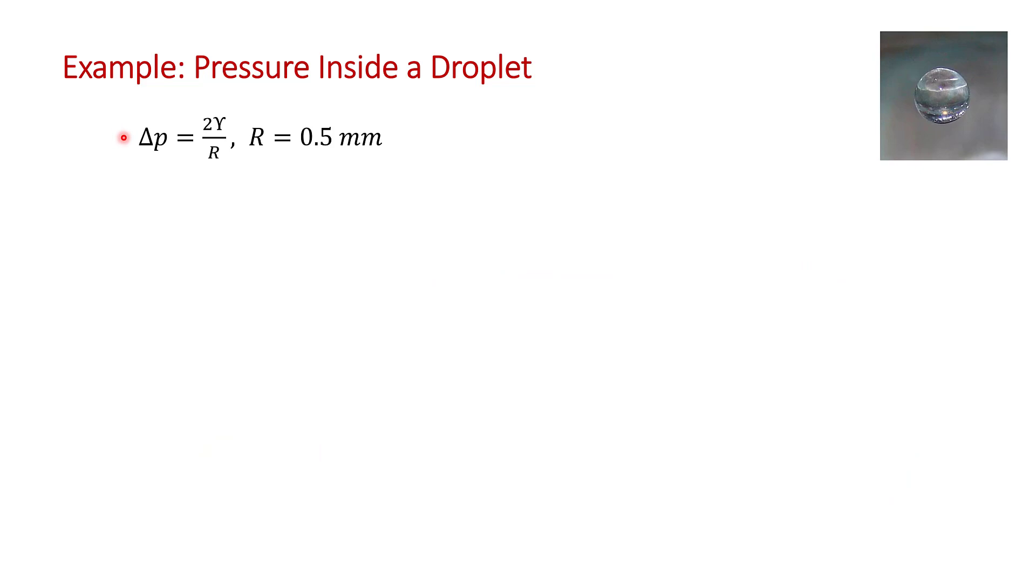I've reproduced that result here: delta p equals 2 epsilon divided by r. And you're told in the problem statement that the radius of the droplet is half a millimeter.